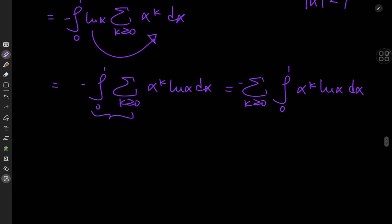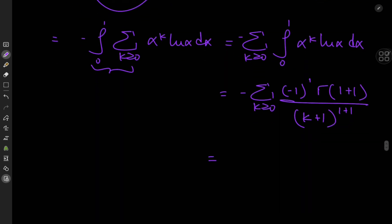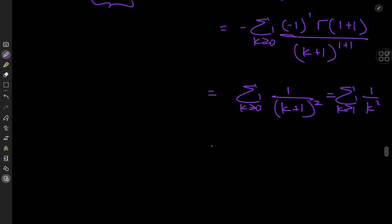There's a cool reduction formula for this — link in the description and a write-up on my Instagram. Applying it, we get the sum over k of negative one to the power of one times gamma of one plus one divided by k plus one to the power of two. That gives negative one times negative one — two negative signs cancelling — so we have the sum over k of gamma two divided by k plus one squared, which equals the sum over positive integers k of one over k squared. This is the Basel problem, equal to pi squared over six.